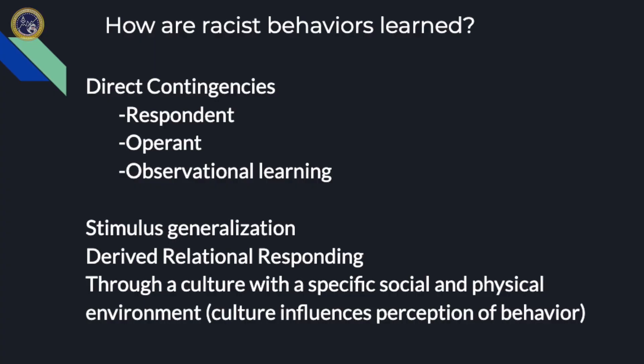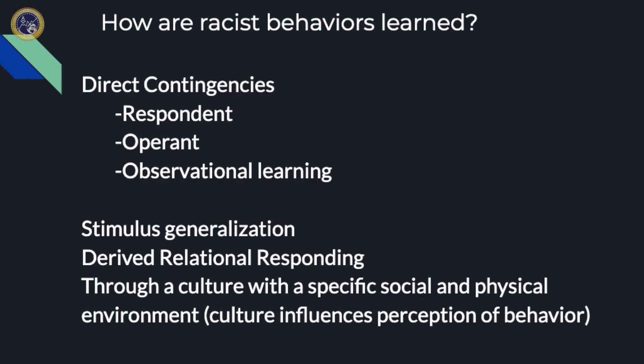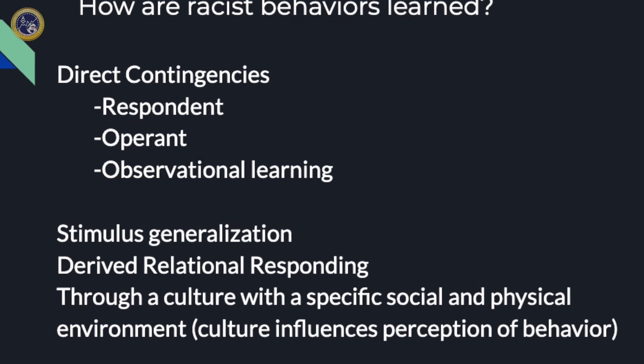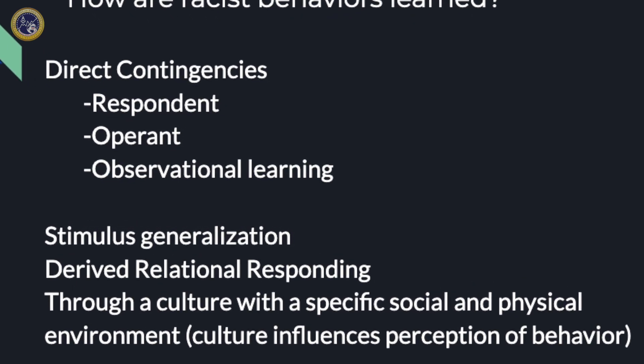For non-behavior analysts, don't worry — I'm going to give clear examples of what all these things mean. With direct contingencies, it just means one thing happens and something directly happens as a result. I want to start with observational learning — that's simply seeing it.